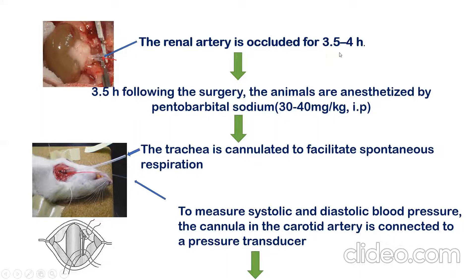Then after three to four hours after this suturing, you can again do the surgery by anesthetizing the animal with pentobarbital sodium. Then after, you can prepare the animal for measurement of the systolic as well as the diastolic pressure. For that purpose, you can insert a cannula into the trachea for artificial or spontaneous respiration.